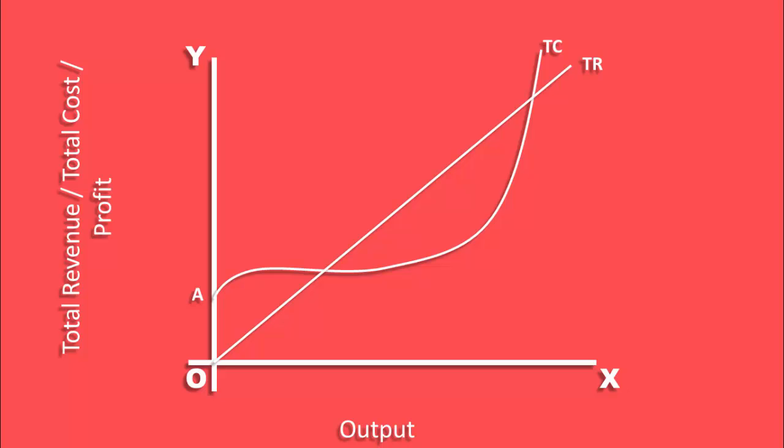For the firm to be in equilibrium, it has to earn maximum profit. We know the vertical distance between total revenue and total cost gives the profit for any given level of output.